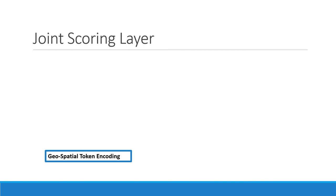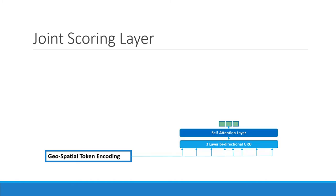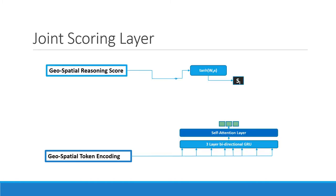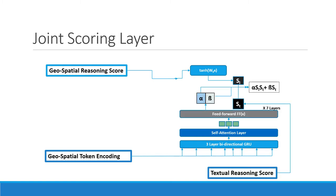In order to perform joint reasoning over both textual and spatial components, we reuse the geospatial token encoding from the geospatial reasoner to generate weights that combine the geospatial relevance score and the textual relevance score, returning a unified spatiotextual score that indicates the relevance of each candidate entity as an answer for a given question.